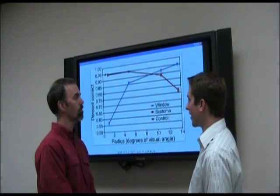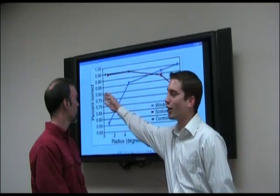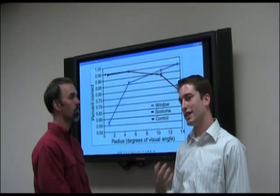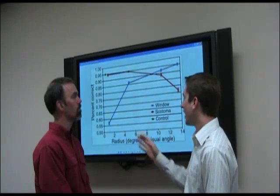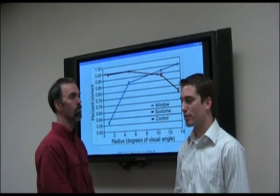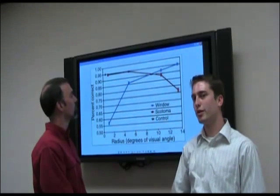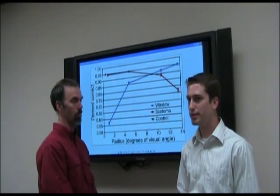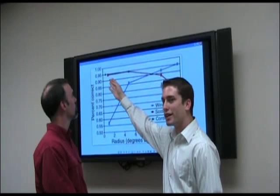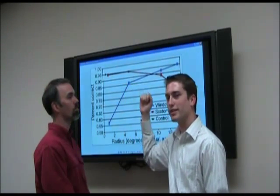Here are our results. On our x-axis we have the radius of our image in degrees of visual angle, and on our y-axis we have percent correct. Our blue condition represents the window condition, where participants are being presented with only central information and the periphery is being blocked. The red scotoma condition shows people being presented with information in the periphery with that central information blocked. The gold dot represents our control condition, where people saw the entire scene image. When blocking only foveal information and allowing participants to view everything in the periphery, there is no difference between that and our control condition.